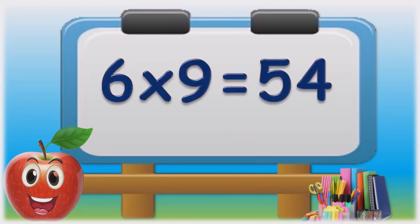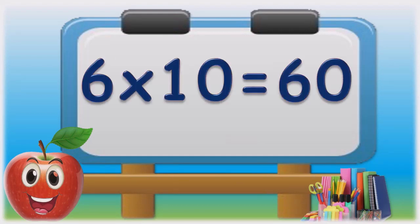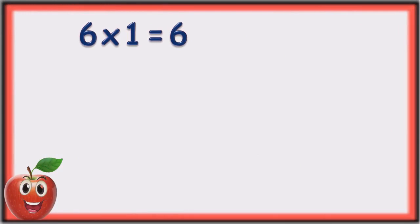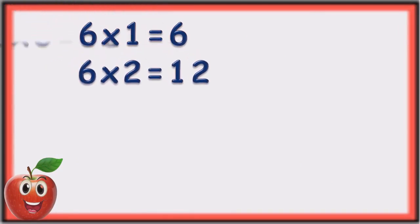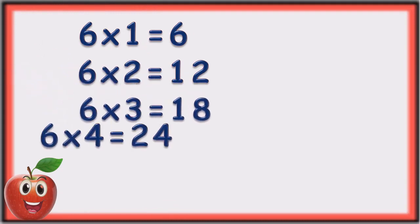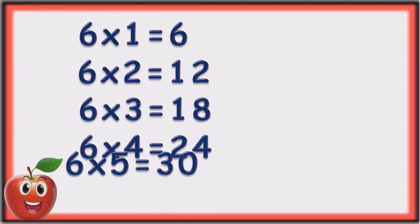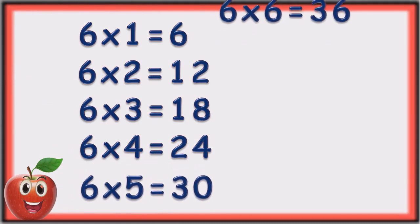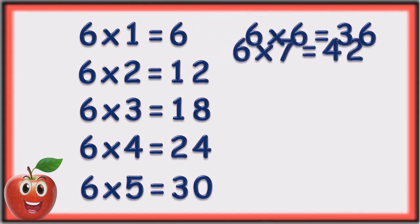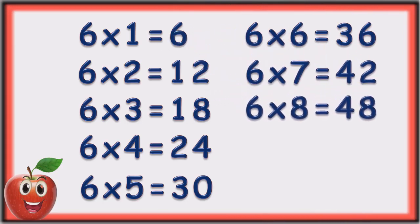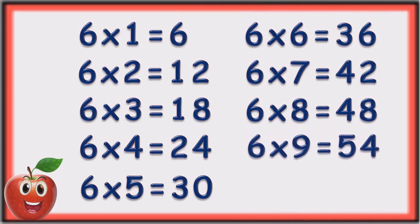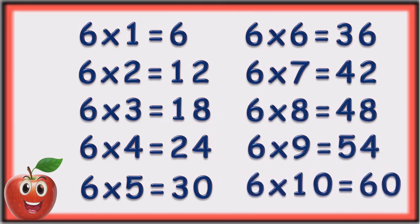Six nines are fifty-four. Six tens are sixty. Six ones are six. Six twos are twelve. Six threes are eighteen. Six fours are twenty-four. Six fives are thirty. Six sixes are thirty-six. Six sevens are forty-two. Six eights are forty-eight. Six nines are fifty-four. Six tens are sixty.